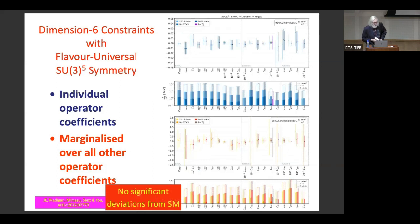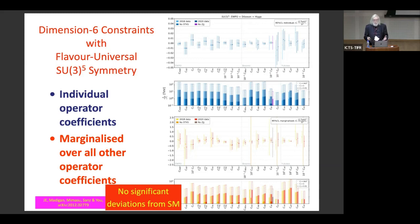We did this SMEFT analysis a couple of years ago. We don't find evidence that any of the coefficients of these operators is non-zero. Instead, we find limits on coefficients suggesting that the heavy particles mediating those interactions must have masses in the TeV range or beyond. That was the picture before the measurement of the W mass by the CDF collaboration was announced.